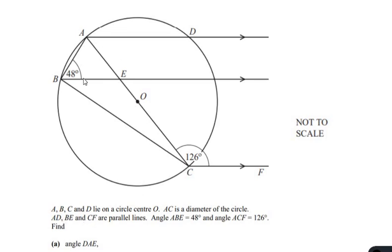AD, BE and CF are parallel lines, so we can see that they are parallel to each other. Angle ABE is given as 48 degrees and angle ACF is given as 126 degrees. Find angle DAE.